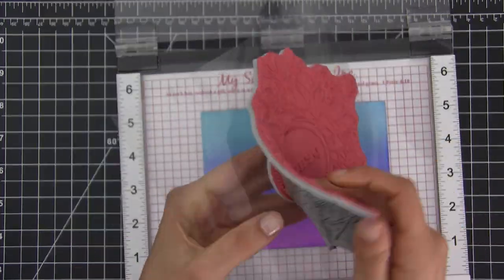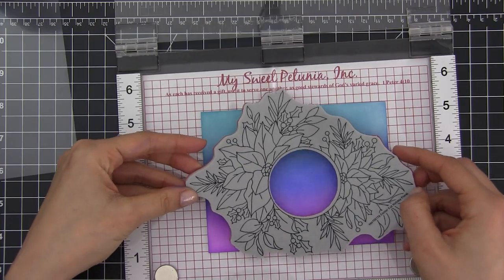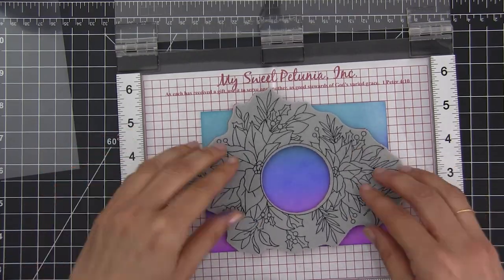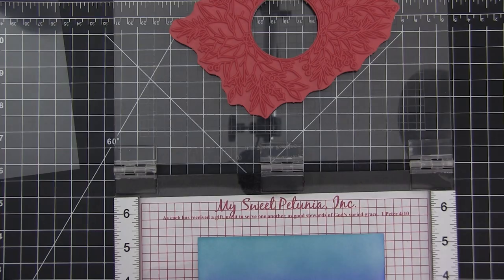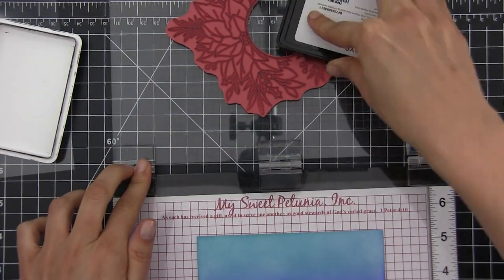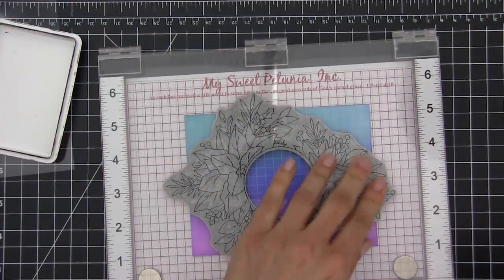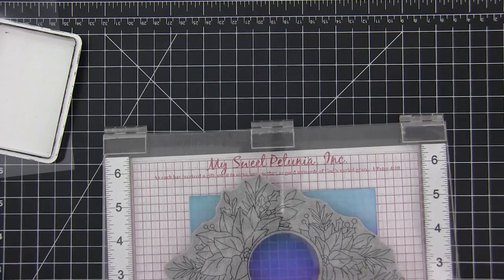Once we have all the panels ready, it's time to start with the techniques, and the first one is really simple. You just need to use a black ink to stamp your background on the panel that you already prepared, and then use a white gel pen to color over the images of the stamp, whatever you want to highlight.